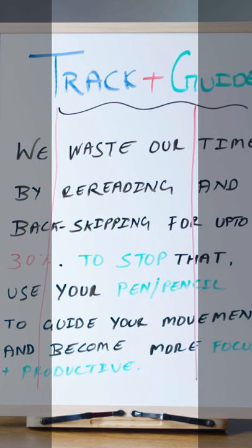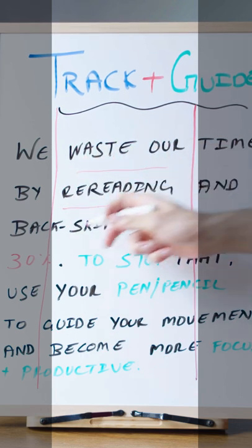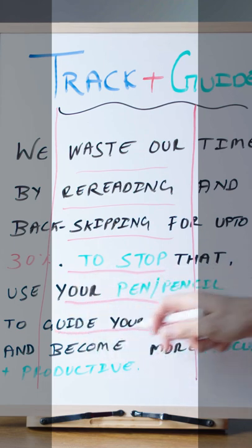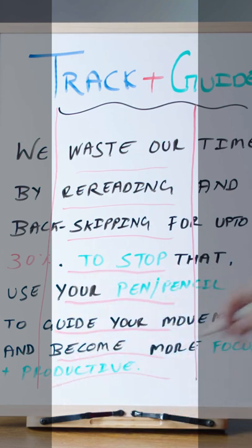Next, practice reading with the guider from at least one word in from the first word of each line and finish one word in from the last word. Don't worry about the first and the last word because your eye will see the word without any effort. Practice this by drawing two margins on a paper and reading.